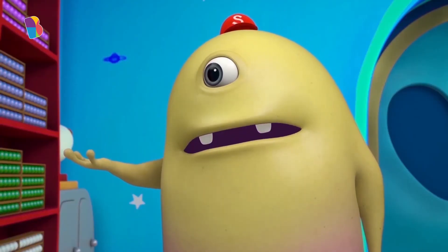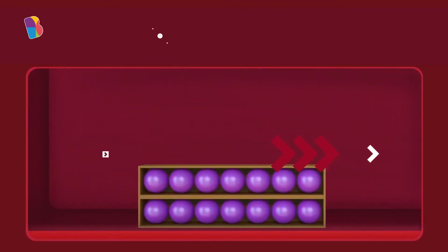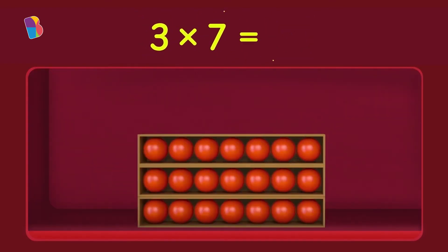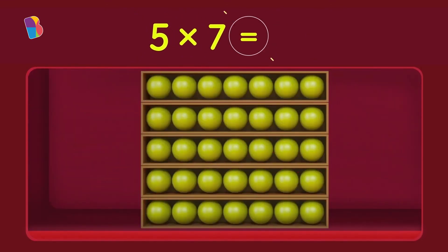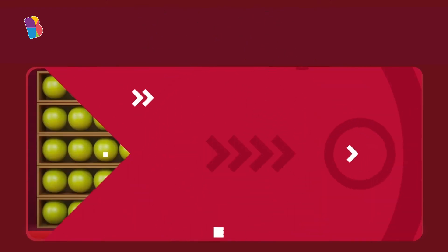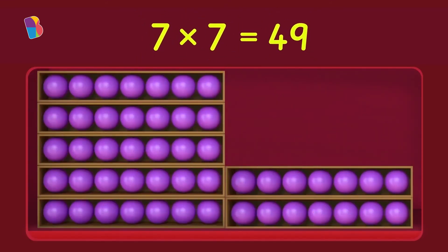From the beginning. One times seven equals seven. Two times seven equals fourteen. Three times seven equals twenty-one. Four times seven equals twenty-eight. Five times seven equals thirty-five. Six times seven equals forty-two. Seven times seven equals forty-nine.